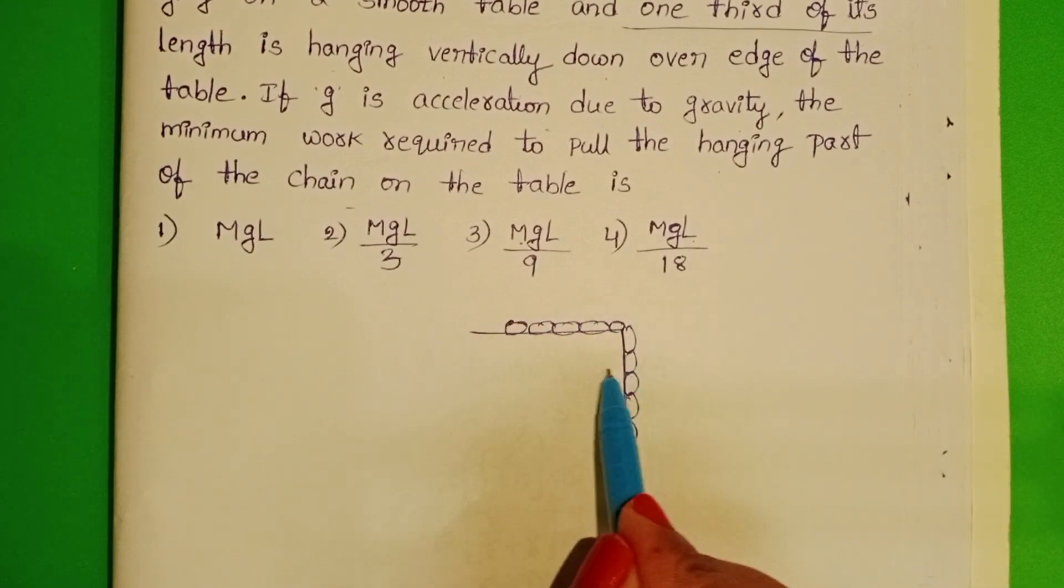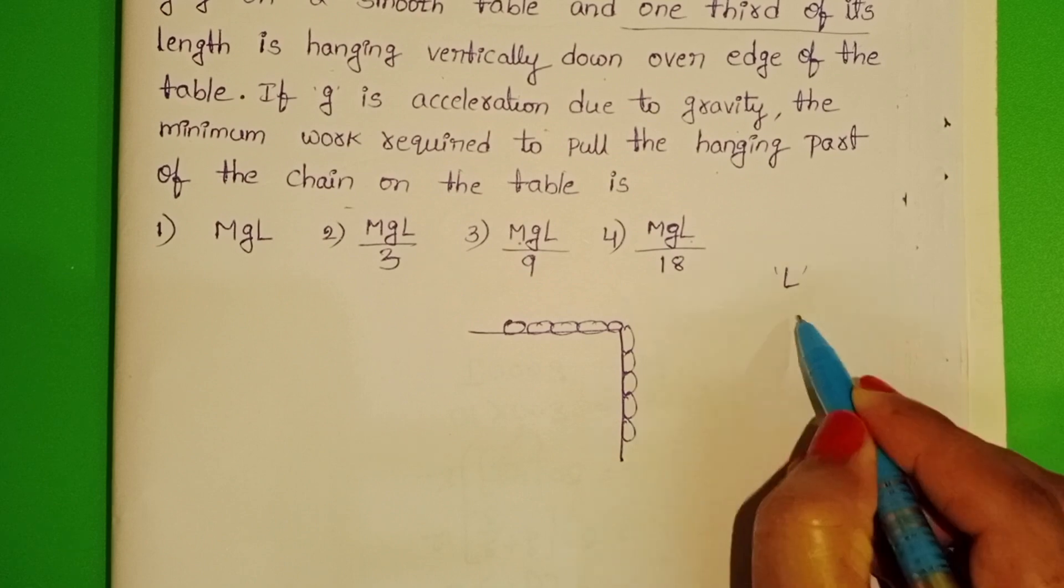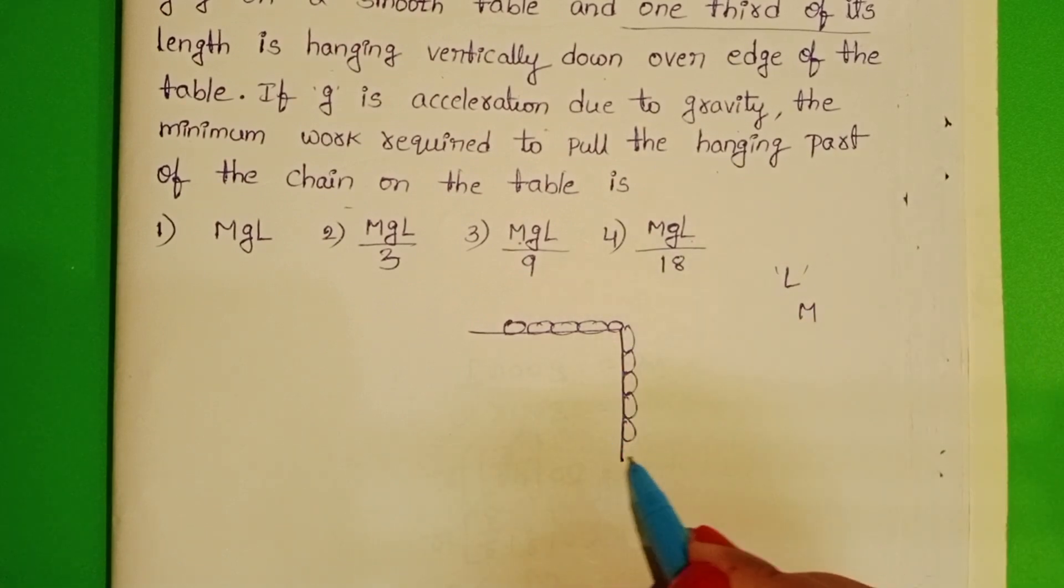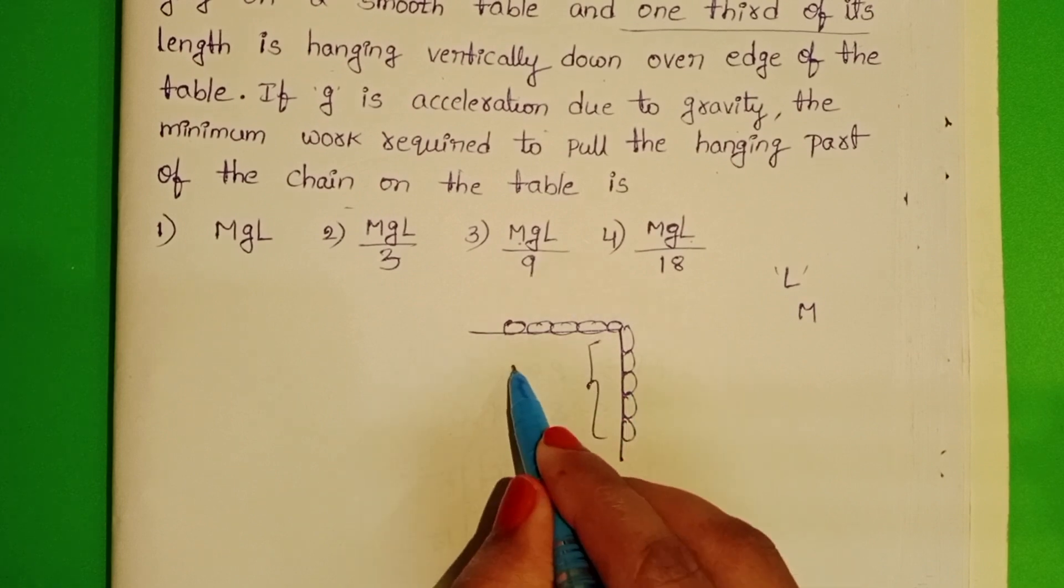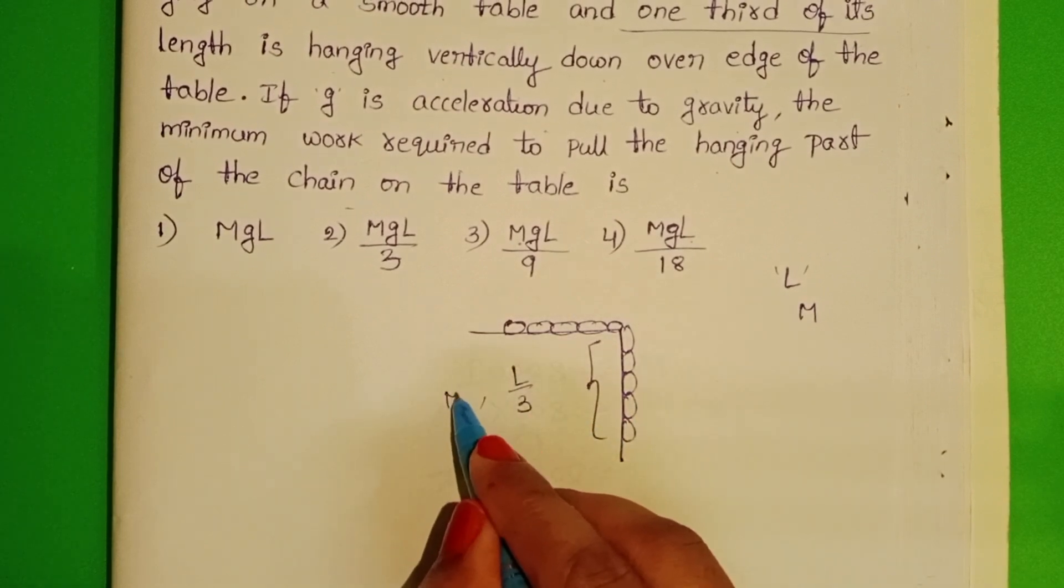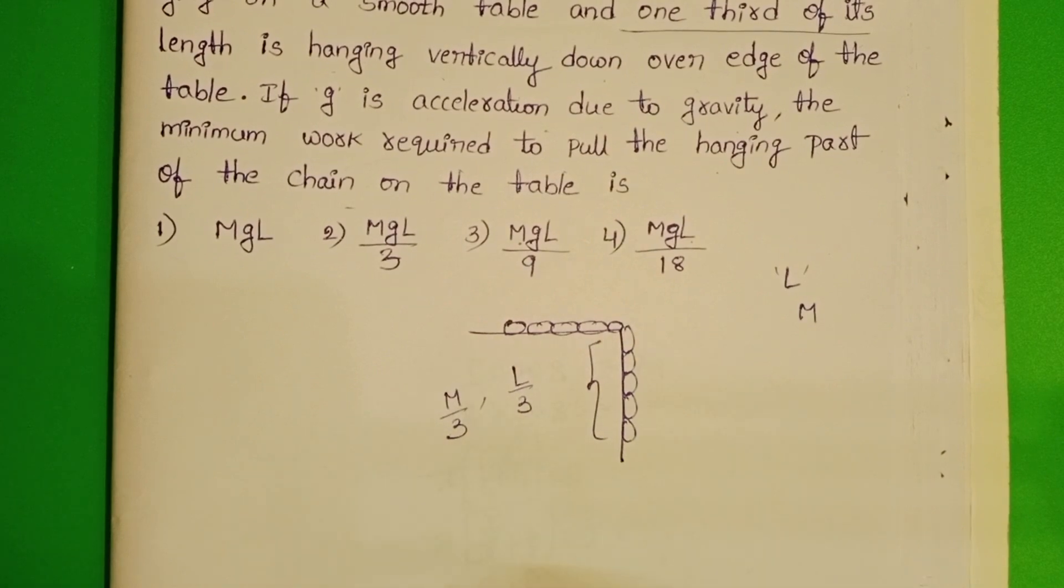Total length of the chain is L and mass is M. This part is one third of its length, L by 3, and mass of this part is M by 3.